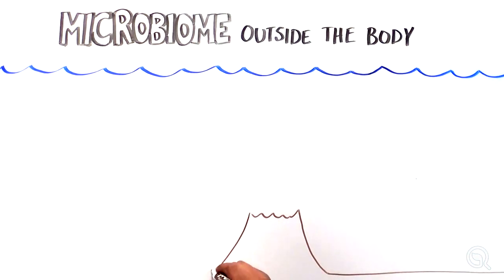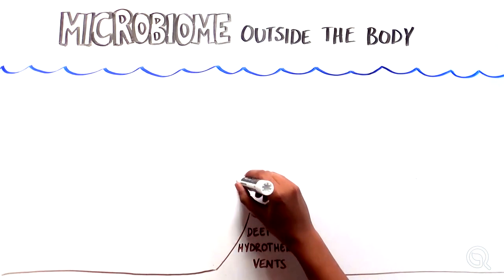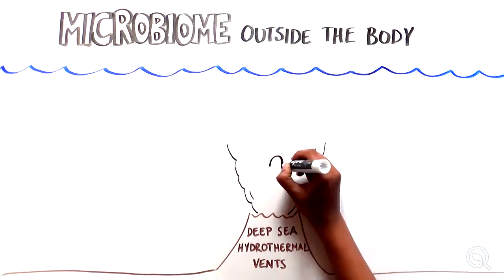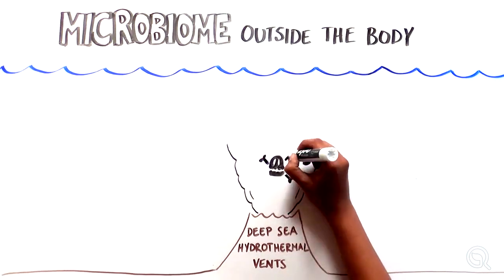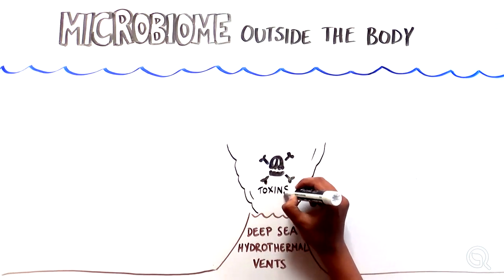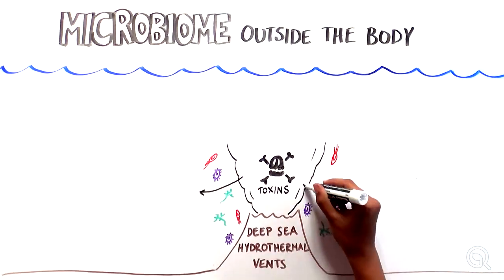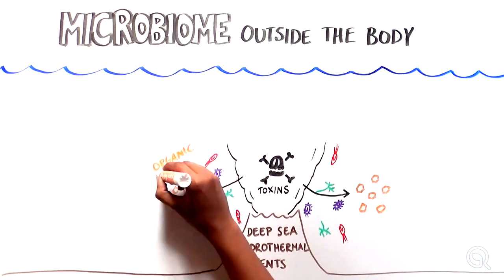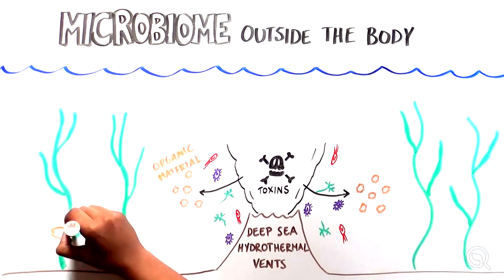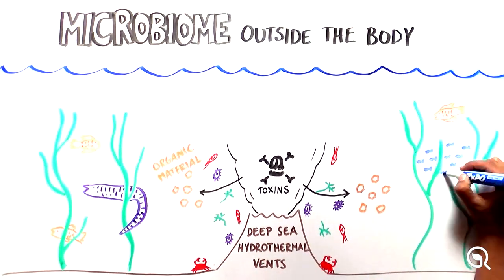For example, there is a unique microbiome that exists around deep sea hydrothermal vents, areas of the seafloor that spew scalding water and chemicals that would be toxic to most living organisms. This community of microbes is able to convert many of these toxic chemicals into organic materials that can be used by other organisms, keeping the ecosystem around these vents healthy.